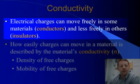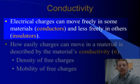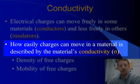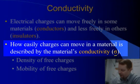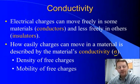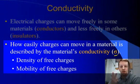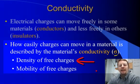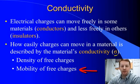Electrical charges can move freely in some materials, we call those conductors, and less freely in other materials, which we call insulators. How easily the charges move in a material is known as the material's conductivity, which is given the Greek letter sigma. The conductivity of a material really depends on two things: the density of free charges and the mobility of those charges.